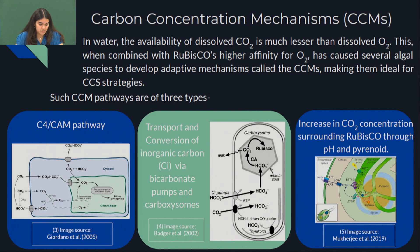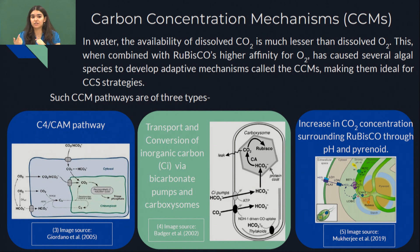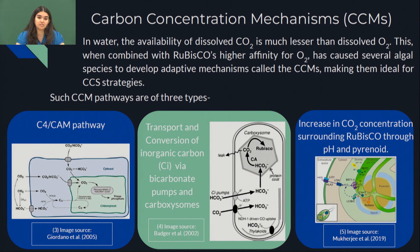The second CCM mechanism involves conversion to inorganic forms — specifically bicarbonates. Carbon dioxide is converted to bicarbonates in these cells and pumped into a micro-compartment known as a carboxysome. This carboxysome is a storehouse of two enzymes: rubisco and carbonic anhydrase. Carbonic anhydrase can convert bicarbonates back to carbon dioxide, so rubisco is then surrounded by a large amount of CO2, thereby increasing its efficiency. The third mechanism uses a light and pH-based gradient to surround rubisco with carbon dioxide, once again enhancing CO2 utilization.